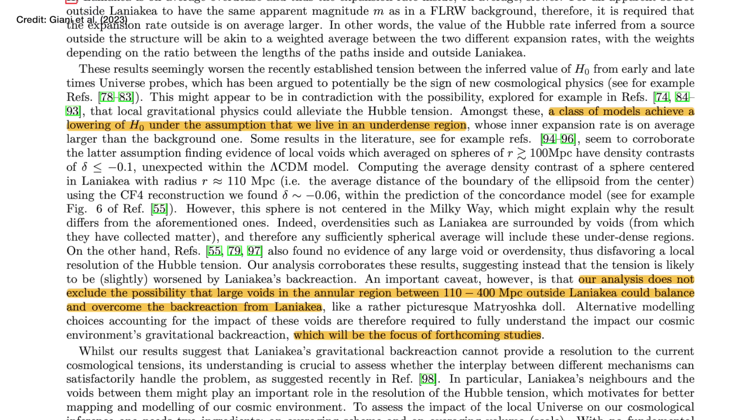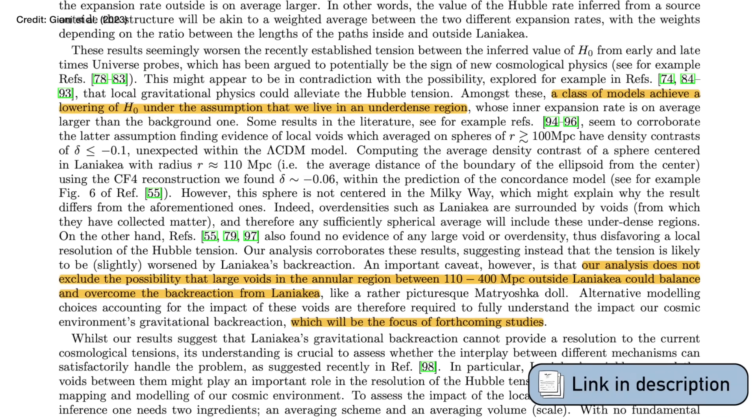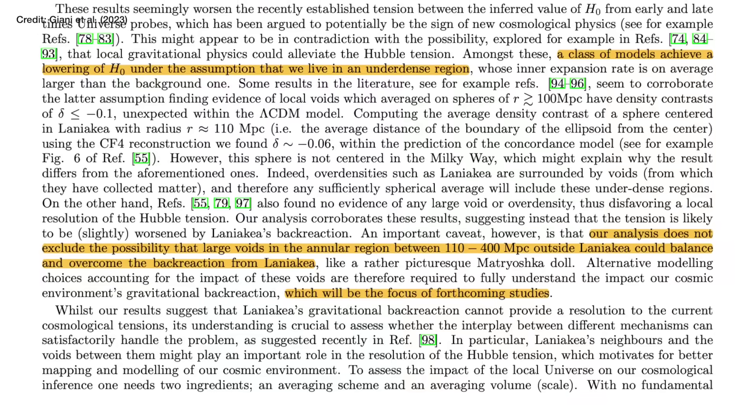The second caveat is that there could actually be a void beyond the Laniakea supercluster. A void is a really underdense region — the exact opposite of a supercluster — where you have barely any galaxies, less gravitational interaction, and therefore the expansion rate in that area will be larger than average. That means the rate you measure from local observations will be higher than it actually is, which would bring that value down and negate the effects that the Laniakea supercluster adds. Gianni and collaborators point out this could be a possibility they intend to study in future work.